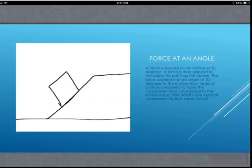A block is placed on an incline of 30 degrees. A force is then applied to the object to pull it up the incline. The force applied is at an angle of 20 degrees to the incline. How large of a force is required to have the component that is horizontal to the incline equal 30 newtons? What is the vertical component to that same force?